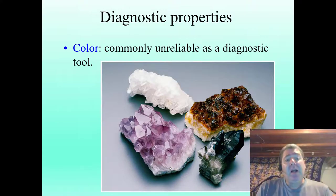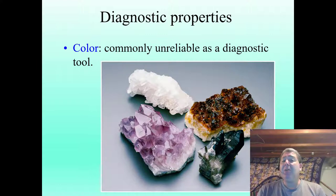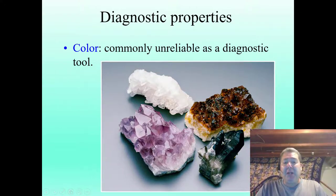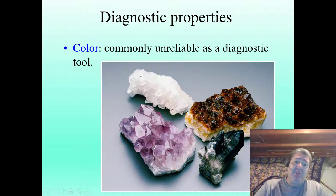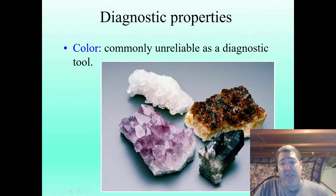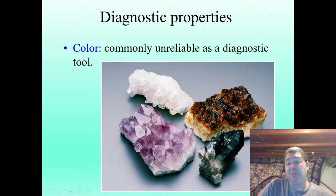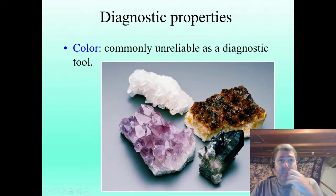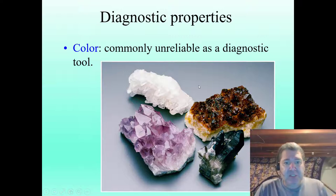Color. Commonly, color is an unreliable diagnostic tool because of impurities and imperfections in the crystal structure — other little ions get in there. For example, these are all examples of quartz: we have clear quartz, amethyst (the purple), citrine (the orange), and smoky quartz which is black. So we have it all the way from crystal clear to pitch black. But all of these will still have this glassy vitreous luster. Even this black stuff, if you look at it closely, it's not opaque — it's transparent, you can see through it.